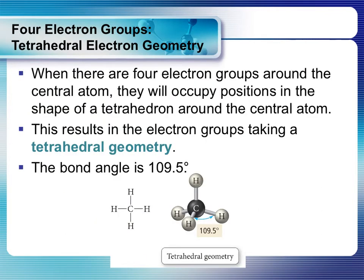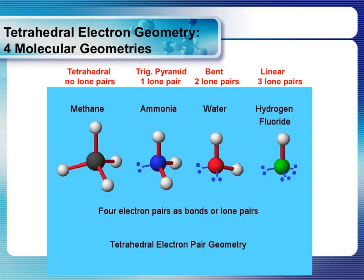Now if we have four electron groups, that is tetrahedral electron domain geometry. As always, if all four regions are bonded atoms, the molecular geometry is also tetrahedral. However, if we have one lone pair, the molecular geometry is trigonal pyramidal. If we have two lone pairs, the molecular geometry is bent. And if we have three lone pairs, we have narrowed it down to a linear geometry.